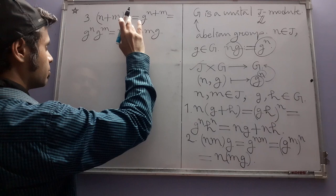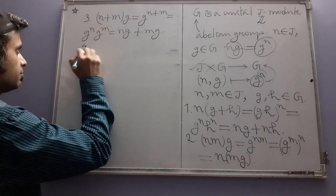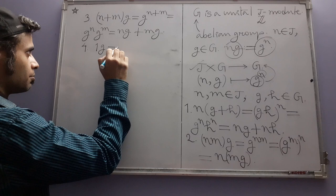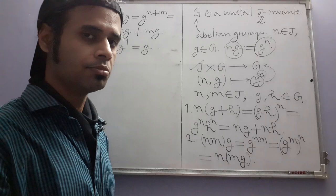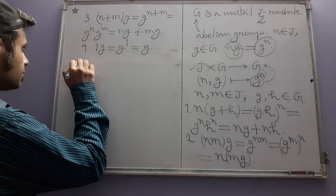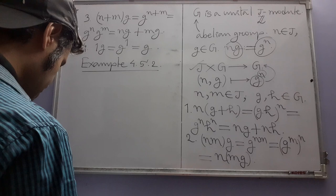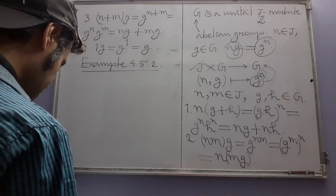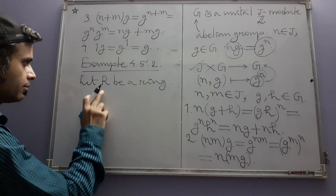Verifying the module conditions is straightforward. Take ring elements r and s, and elements a and b from the left ideal. Then r(a+b) = ra + rb by the left distributive law in R. And (rs)a = r(sa) because multiplication in R is associative. Condition (3), (r+s)a = ra + sa, follows from the right distributive law.